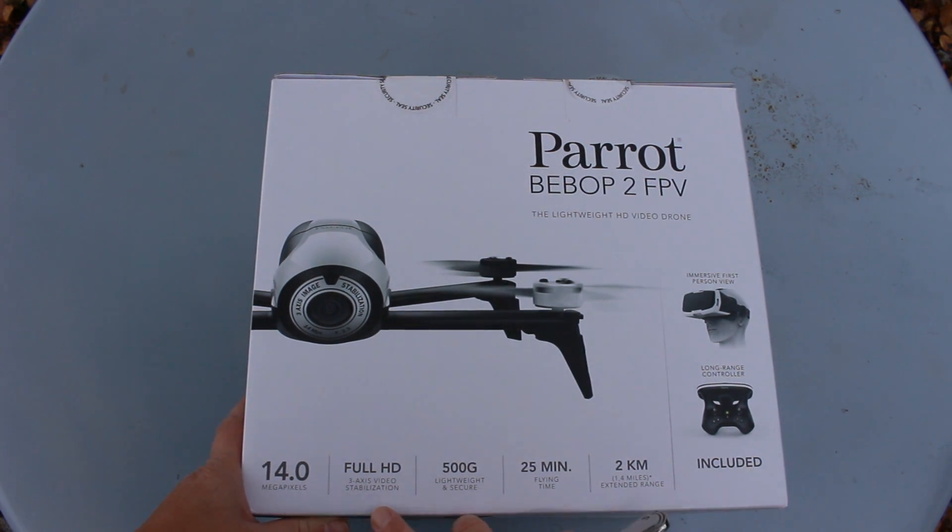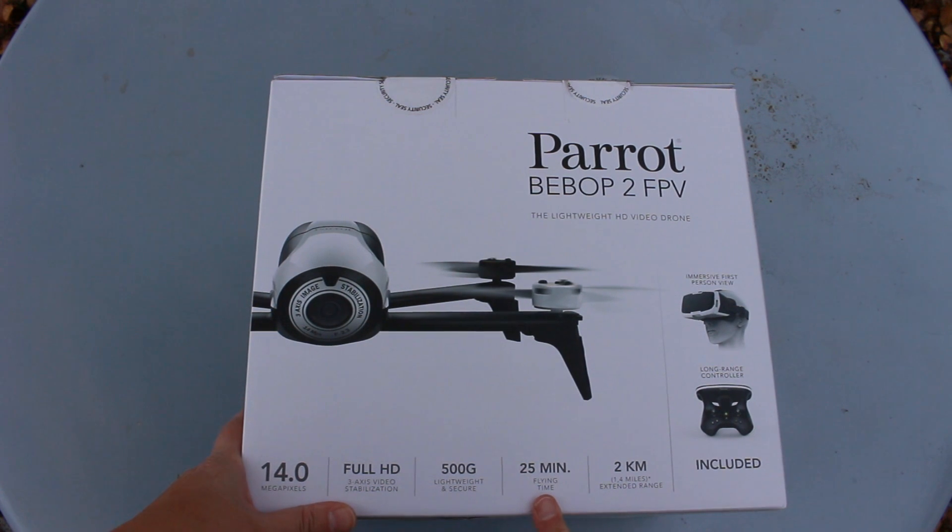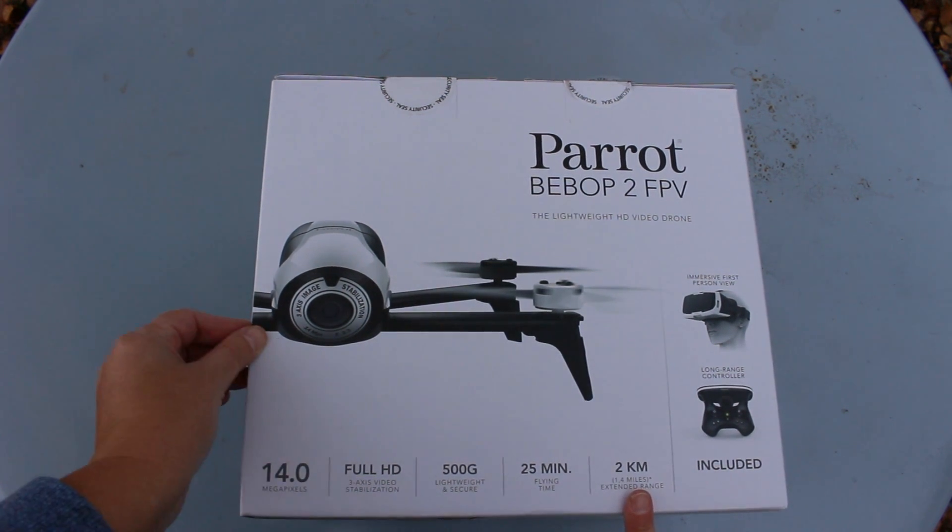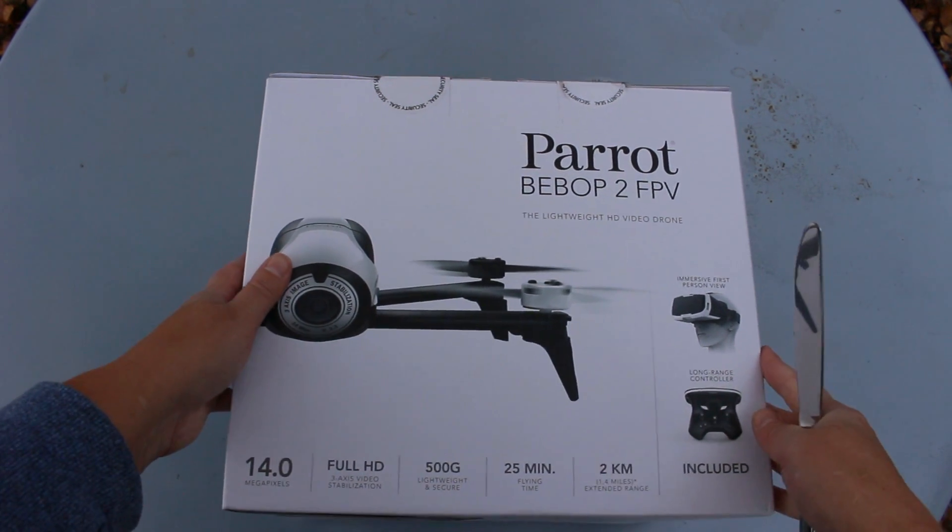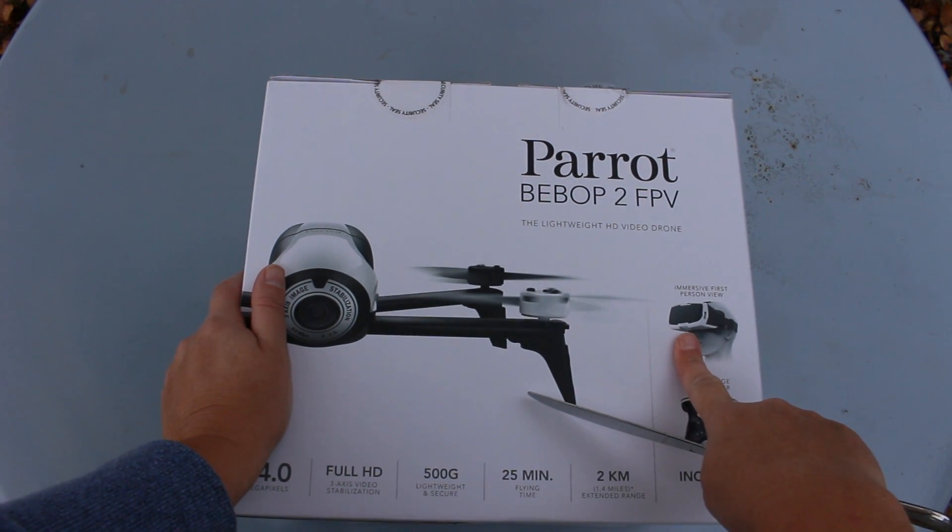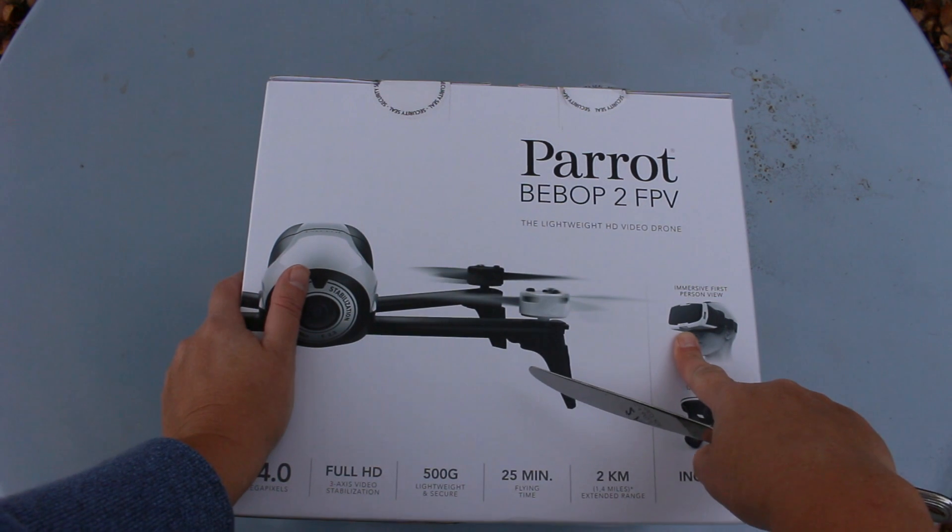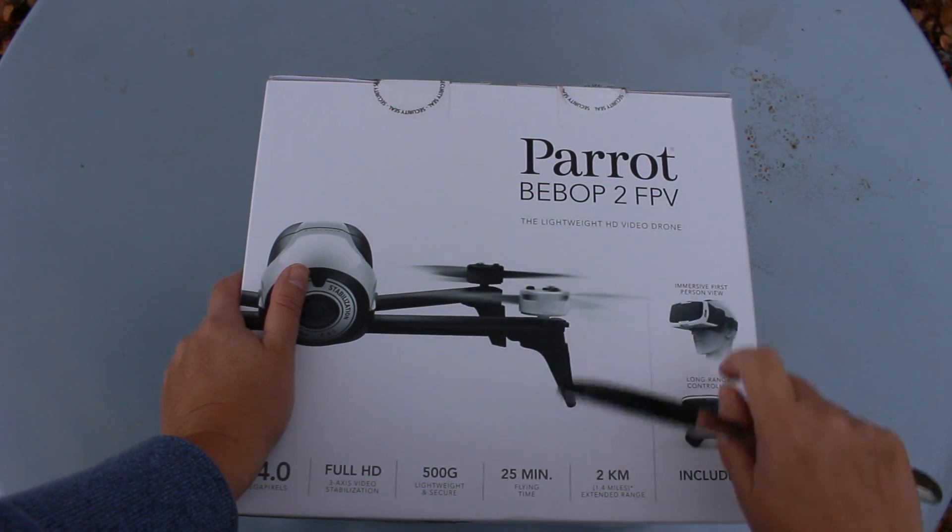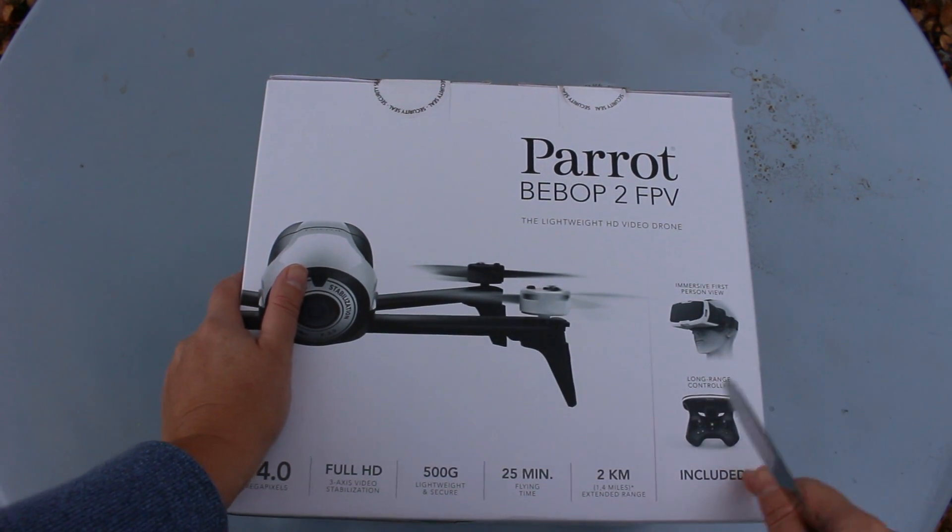Tells you a little bit about it. We've got a 14 megapixel camera on board, full HD, 25 minutes of flying time and a 2 kilometer range. That's 1.4 miles if you're in the States. This is really cool because it comes with a set of goggles that give you the first person view. That's the FPV in the title and also the sky controller.